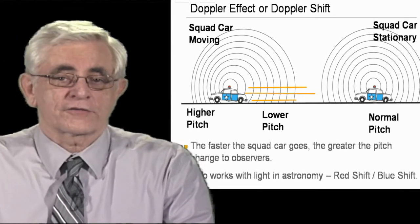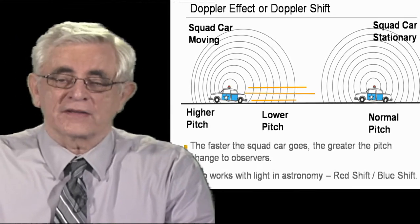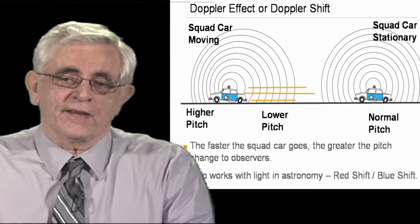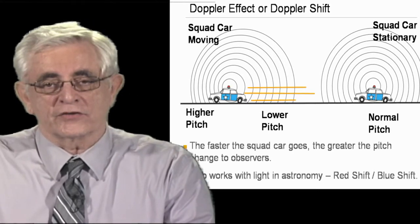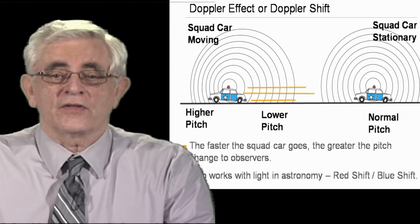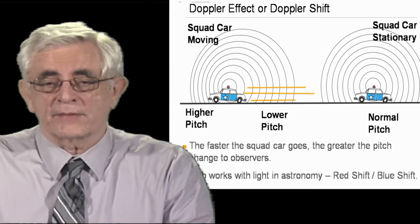So the Doppler effect is kind of a neat thing because it has many applications. It's used in medicine. If you ever get, oh, going for, say, an ultrasound, they might turn on the sound for you and hear the whooshing sound. That's a Doppler effect. They're actually measuring the flow of blood. And when the blood passes by, it changes the sound. Well, in this case here, the faster the squad car goes, the greater the pitch change. But this also works in astronomy when you're looking at stars because light will shift the same way. And you can tell whether your star is moving towards you or away from you by how the light is shifted, either to the red side of the spectrum or the blue side.